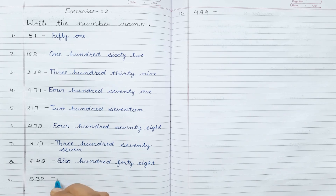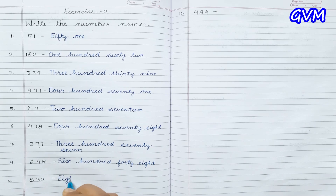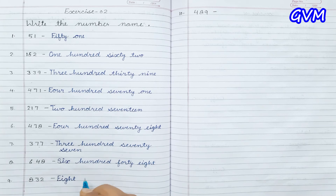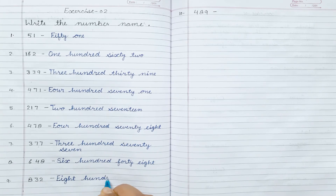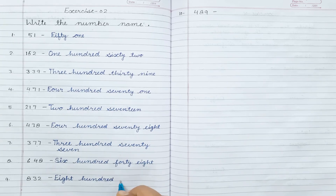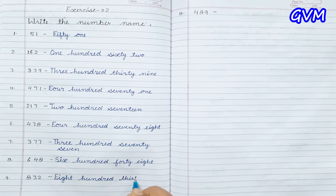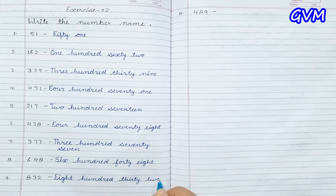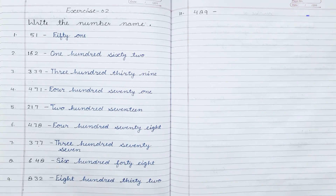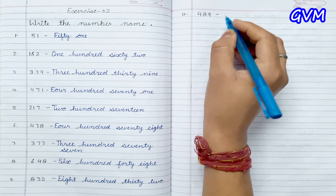Next is eight hundred thirty-two. E-I-G-H-T, eight; H-U-N-D-R-E-D, hundred; T-H-I-R-T-Y, thirty; T-W-O, two. Eight hundred thirty-two.